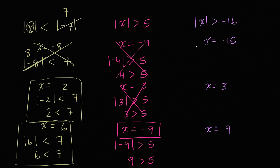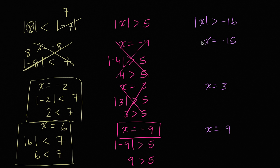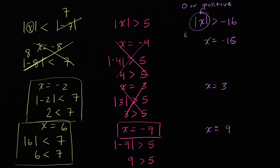Now let's do this one in light purple. The absolute value of x needs to be greater than negative 16. There's something very interesting about this one — we don't even have to look at the choices. Can you think of any x for which this would not be true? The absolute value of a number is never going to be negative; it's going to be 0 or positive — non-negative. So if the absolute value is 0 or positive, it's always going to be greater than a negative number. This is actually true for all x's.